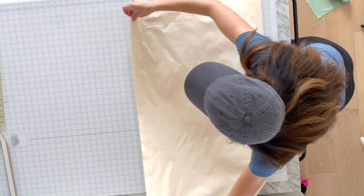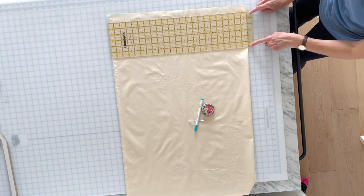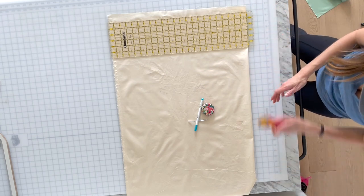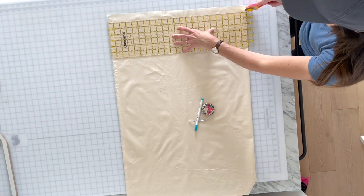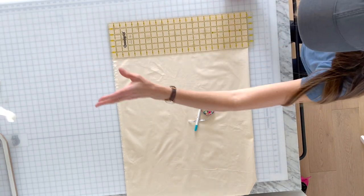I'm going to line up this horizontal line on my ruler with the fold of my fabric and I'm going to give myself one clean edge. Here we go.